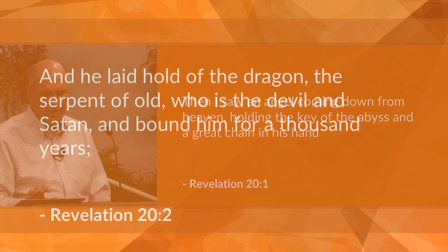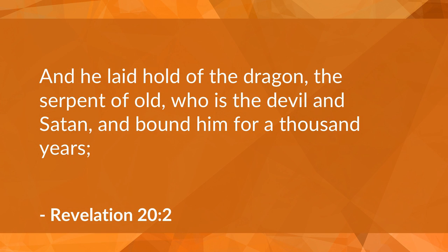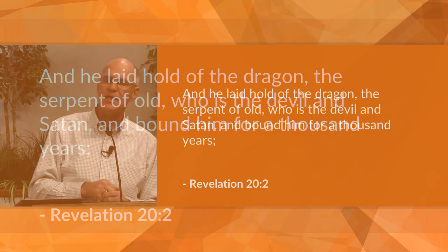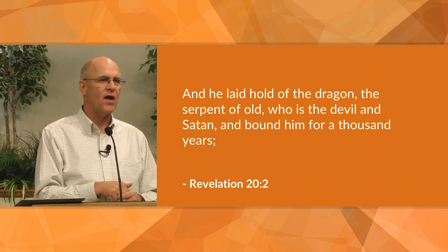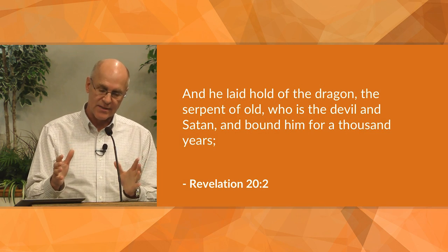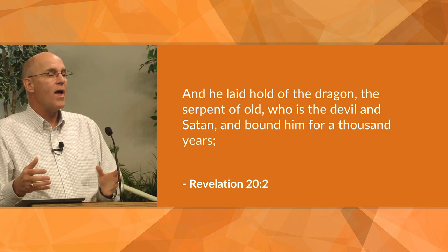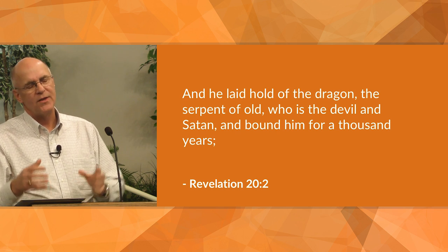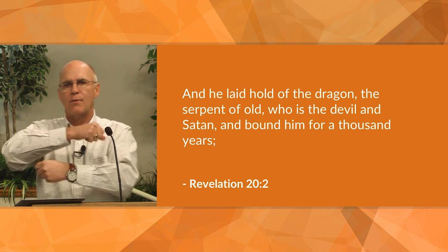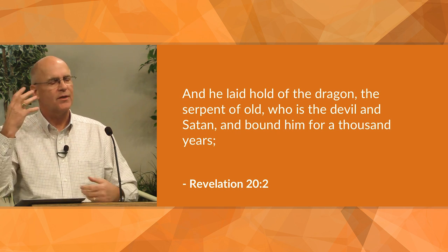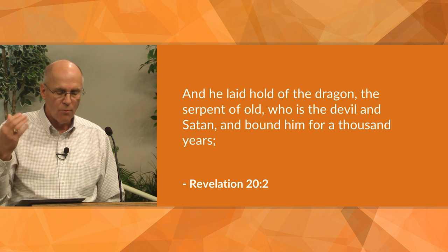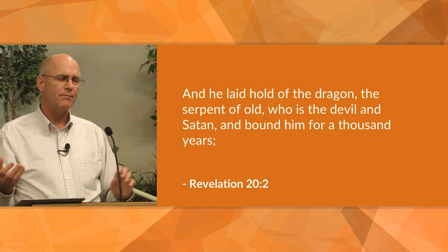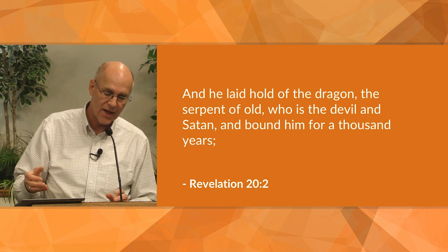Verse 2: 'And he laid hold of the dragon, the serpent of old, who is the devil and Satan, and bound him for a thousand years.' Satan is bound for a thousand years. Bound in what way? The imagery is he's tied up with a chain, but the meaning is limited power, limited effect.